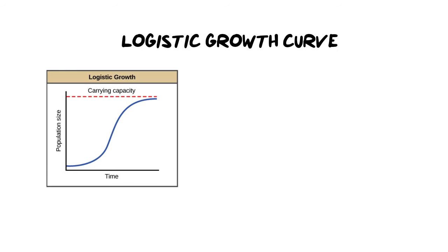We now move into the next growth curve, which follows exponential growth, and that is logistic growth. Logistic growth has a very defining S shape, and it's made up of two components — a couple of phases. The first phase is the exponential growth we've just looked at, which happens at the beginning. But then it's followed by the logistic part, when it starts to level off and flatten.